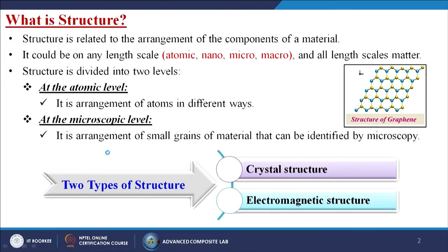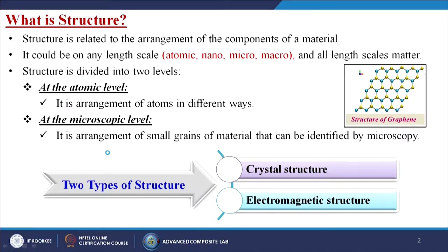Structure is generally divided into two levels: the atomic level and the microscopic level. The atomic level gives us different arrangements of atoms, while the microscopic level gives us small grains of materials that can be identified by microscopy — either optical microscopy, scanning electron microscopy, or transmission electron microscopy. Generally there are two types of structure: crystal structure and electromagnetic structure.